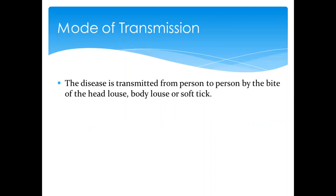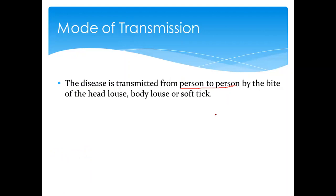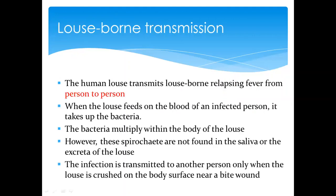Regarding mode of transmission, the disease is transmitted from person to person via a bite. It cannot go directly from person to person on its own — we need the vector, whether a tick or a louse, to bite. For example, a soft tick carrying the bacteria in its salivary gland bites a person, infecting them, and then another soft tick biting that person can transmit it further.